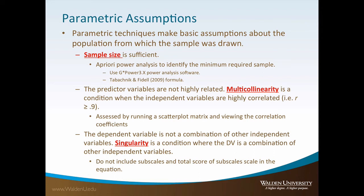I now want to talk briefly about parametric assumptions. A detailed discussion is beyond the scope of this short video. However, when using multiple linear regression, there are certain basic assumptions drawn about the population from which the sample was drawn. For example, you want to make sure you have a sufficient sample size — if you do your power analysis as depicted previously, this assumption will be met. Another key assumption is that of multicollinearity, which is a condition where any two independent variables are highly correlated. This is a condition you want to avoid at all costs. If you encounter it, you must decide on removing one of the independent variables from the analysis. You can assess this assumption by running a scatter plot matrix and viewing the correlation coefficients from a correlation analysis.